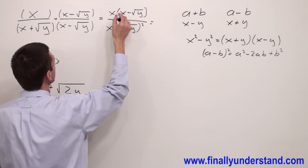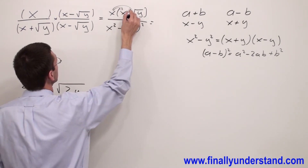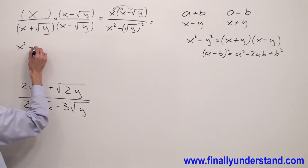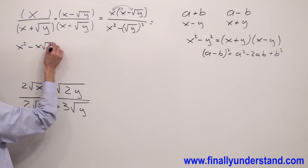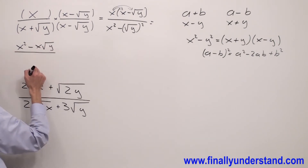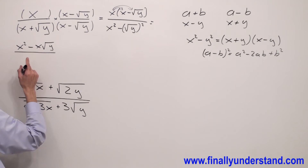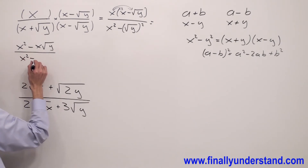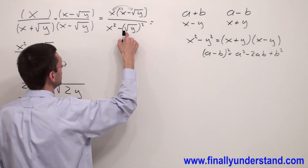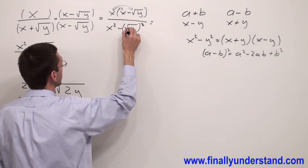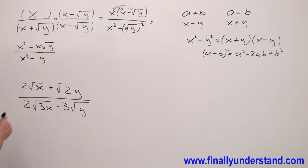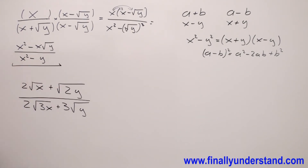I'm going to distribute this x into the parentheses and I'm going to have x squared minus x times square root of y over x squared minus y, since squaring the square root eliminates the radical sign. I cannot simplify this fraction anymore, so this is the solution to my problem.